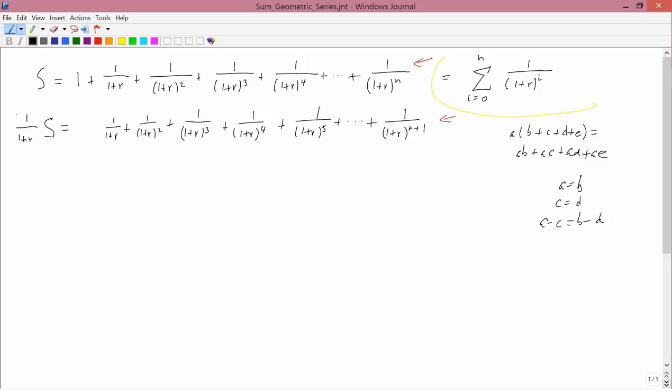On the left-hand side, I get the top expression, S, minus the bottom expression, 1 over 1 plus R times S. And look what I get on the right-hand side. I get 1. And then I have plus 1 over 1 plus R minus 1 over 1 plus R. The second one is minus because I'm subtracting the second equation. So those cancel. Similarly, these two are going to cancel, these two are going to cancel, these two are going to cancel.